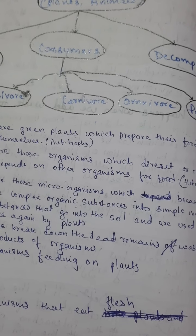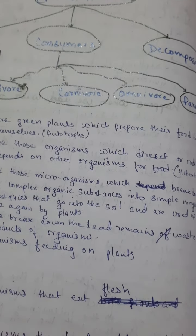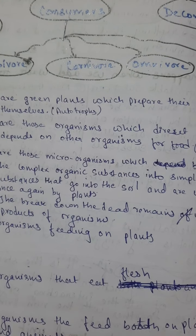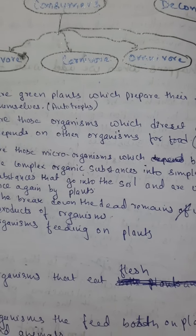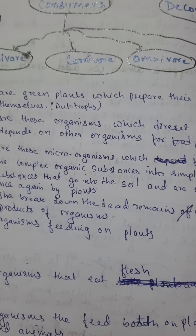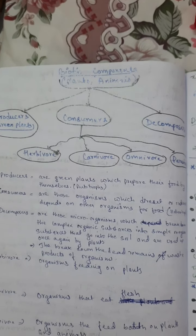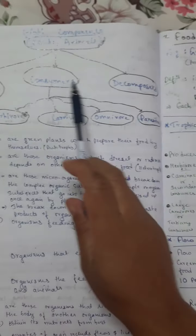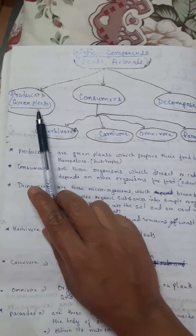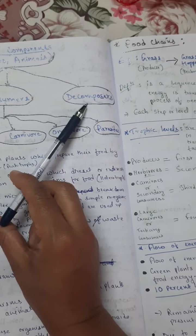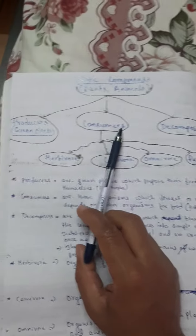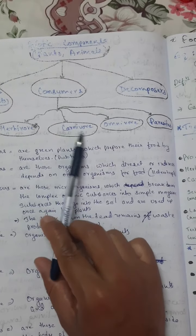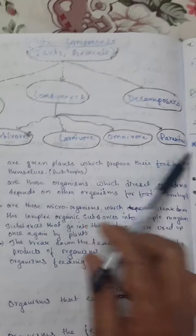Our ecosystem comprises of, or is made up of, biotic and abiotic factors. Biotic means living things — that is, plants and animals. Abiotic means non-living things — that is, soil, water and all. The biotic component of our ecosystem consists of producers (they are the green plants), consumers, and decomposers. These consumers are of different types: herbivores, carnivores, omnivores, and parasites.